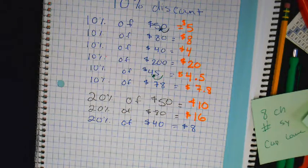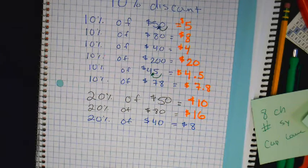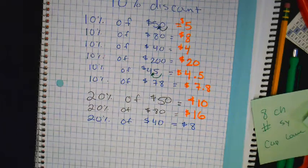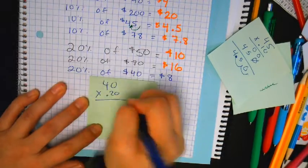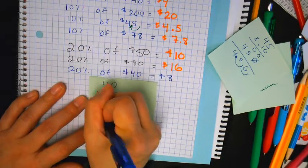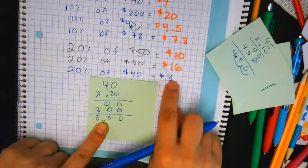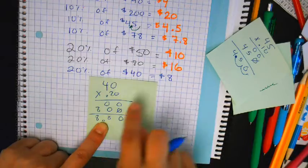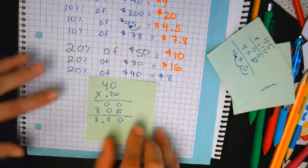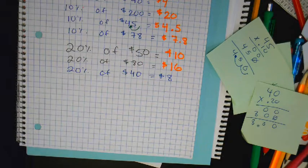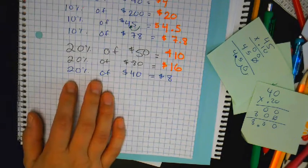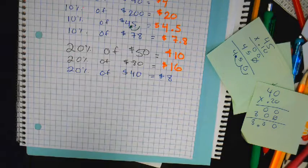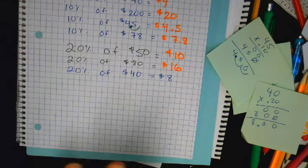Another shortcut — if you get it, fantastic. If you don't get it, that's fine. There's nothing wrong with doing it the long way: 40 times 0.20 — zero placeholder — gives me 8 dollars. We get the same answer. This is called a shortcut — it's a little bit faster, but if you don't feel comfortable with it, don't use it. It might not make sense until maybe you're a sophomore in high school and it clicks. It is a very useful shortcut.